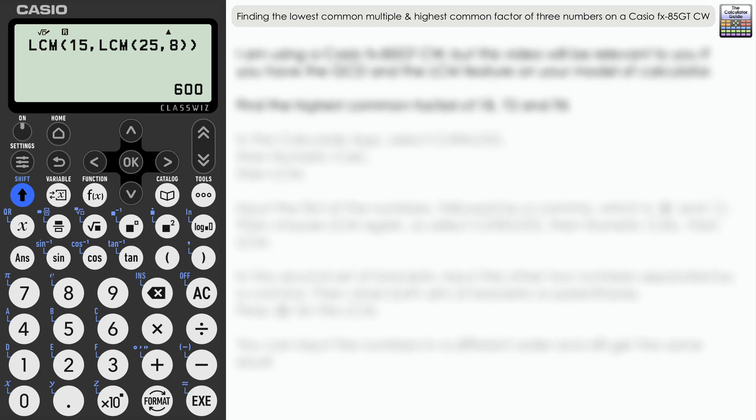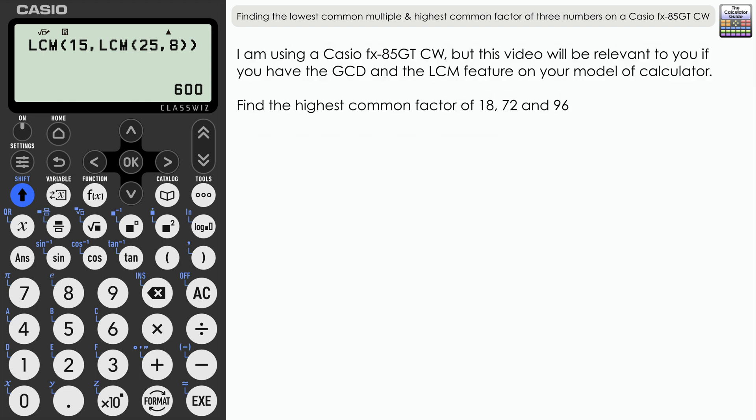So it doesn't matter what order you input them in, you're going to get the same result. Let's try highest common factor now, or greatest common divisor depending on where you are. We tend to say highest common factor here in the UK. We've got three numbers here: 18, 72, and 96.